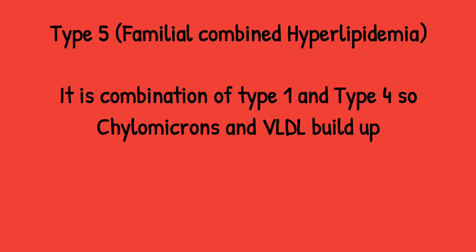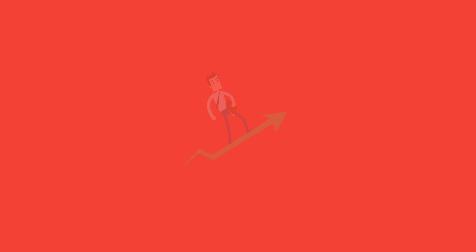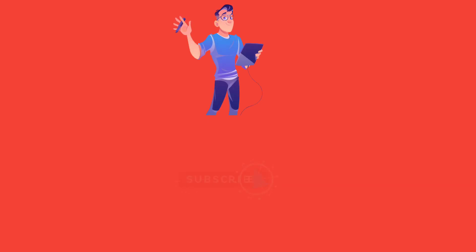Type 5 is familial combined hyperlipidemia. It is a combination of Type 1 and Type 4, so there is buildup of chylomicrons and VLDL respectively. Treatment again: because of TG buildup, fibrates are used and statins can also be used. I hope this quick review will help you in the exam. Please subscribe and like the channel.